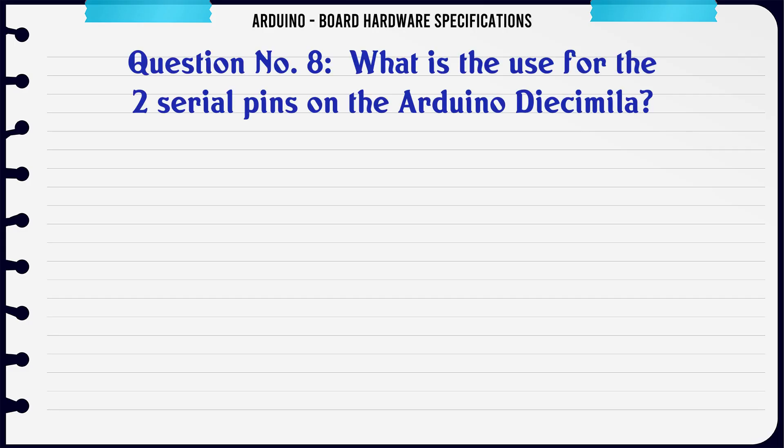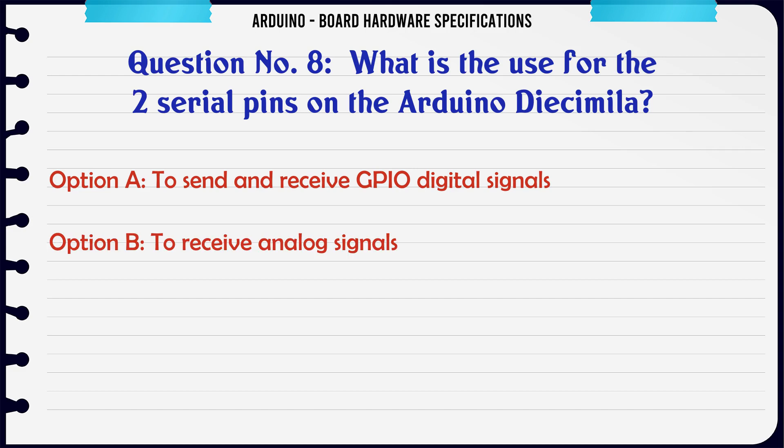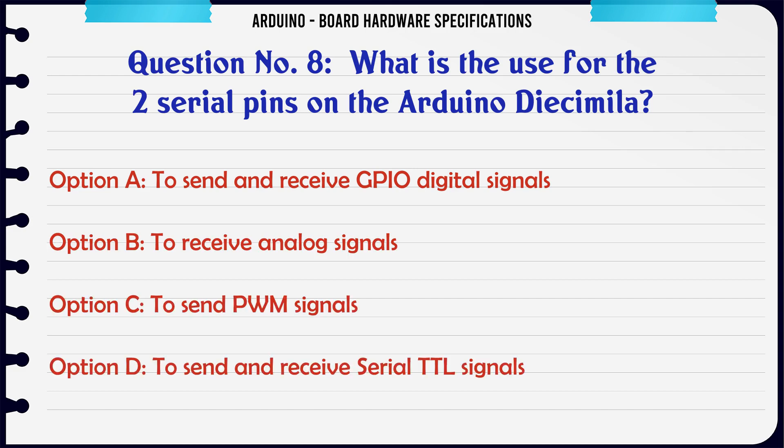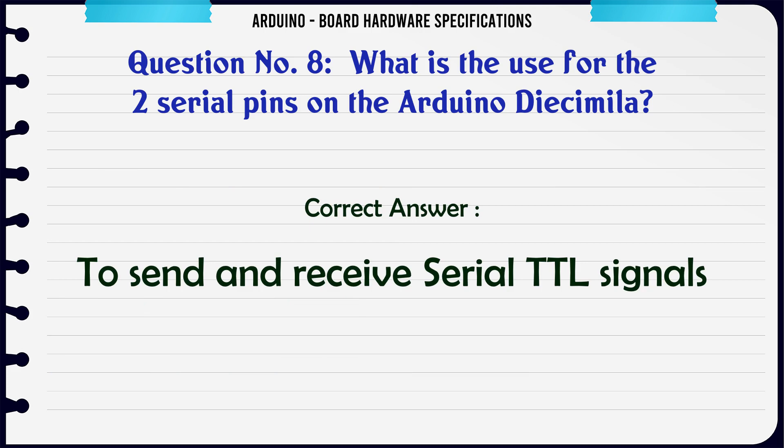What is the use of the two serial pins on the Arduino Daiichi Milla? A: To send and receive GPIO digital signals. B: To receive analog signals. C: To send PWM signals. D: To send and receive serial TTL signals. The correct answer is: To send and receive serial TTL signals.